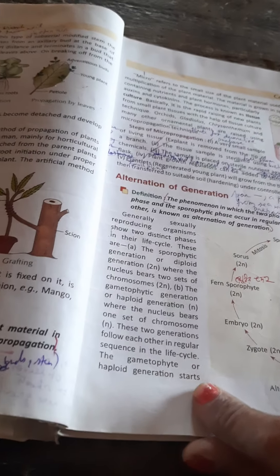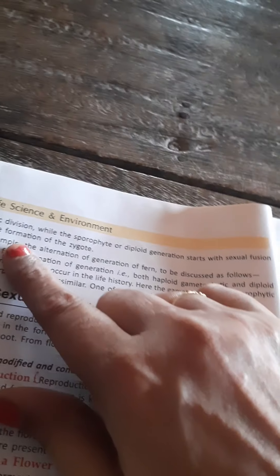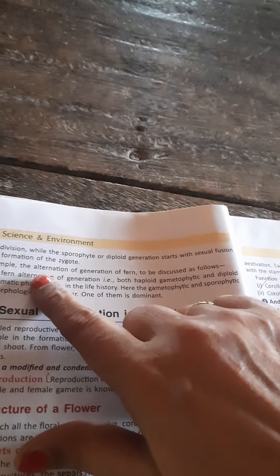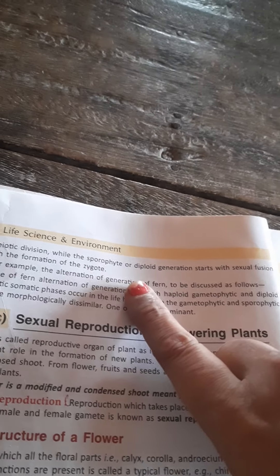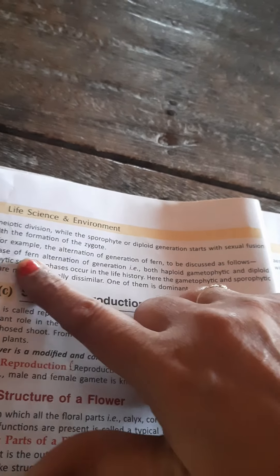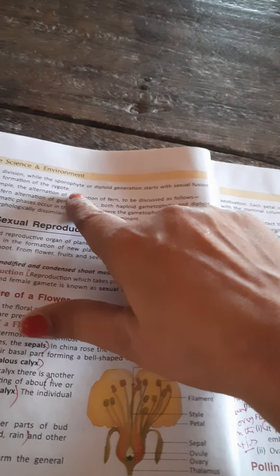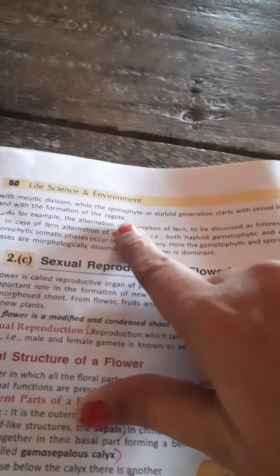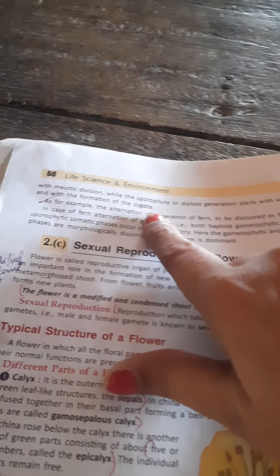The gametophyte or haploid generation starts with meiotic division — meiotic division produces the haploid generation. While the sporophyte or diploid generation starts with sexual fusion and the formation of the zygote. When male and female gametes unite, the zygote is formed. The zygote is diploid, 2N.